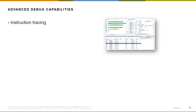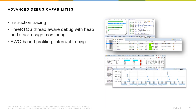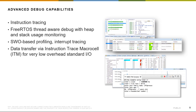MCU Expresso IDE adds many debug capabilities to the standard Eclipse platform, including instruction tracing for ARM Cortex-M0+ and other trace-enabled parts, FreeRTOS Thread-Aware Debug with heap and stack usage monitoring, SWO-based profiling and interrupt tracing, and data transfer via instruction trace macrocell for very low overhead standard I/O, in addition to many other features.